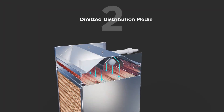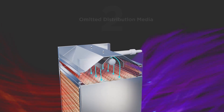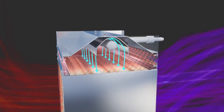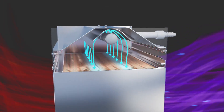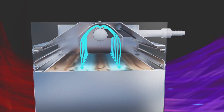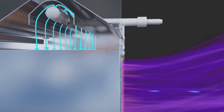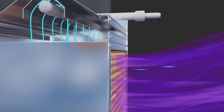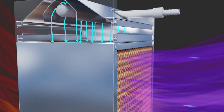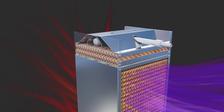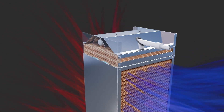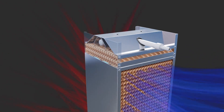Omission of distribution media. Without proper distribution, water streaks through the media, reducing cooling efficiency. Overloaded sections may also increase water particles in the air. Insert distribution media to create a seal and ensure even water dispersion.